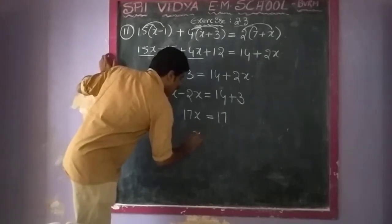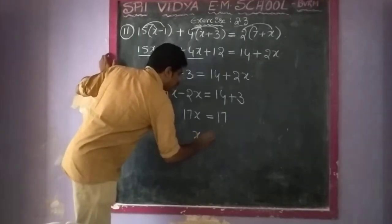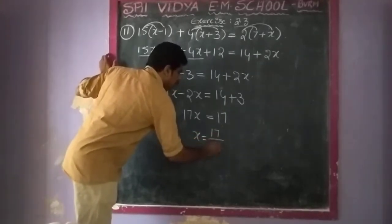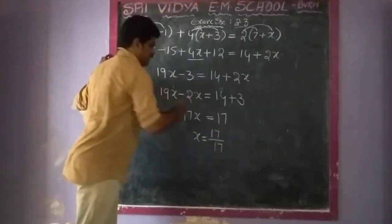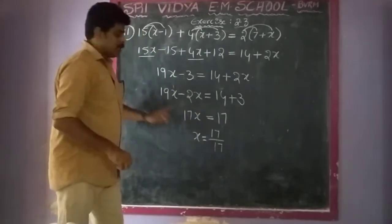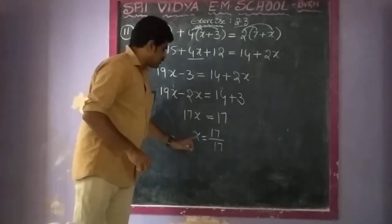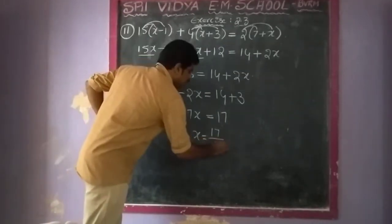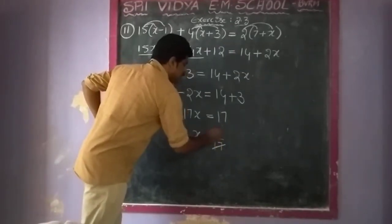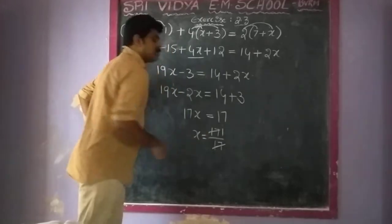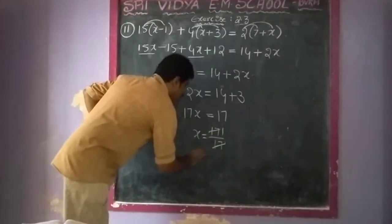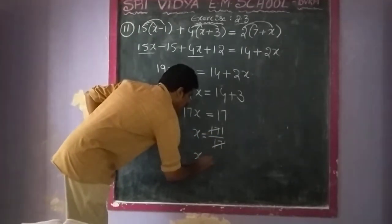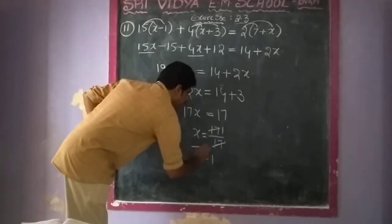Then x is equal to 17 by 17. So 17 and 17 will be cancelled, and x is equal to 1.